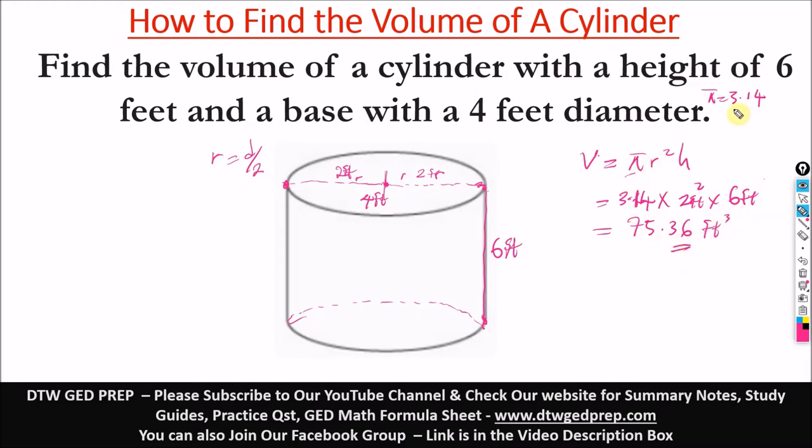In case you're not given a value of pi, so you don't get confused, you would just make pi to remain the same in the formula. So this would be pi, then 2 squared, that's 4 times our height is 6. This is 2 squared.